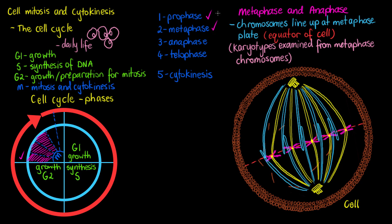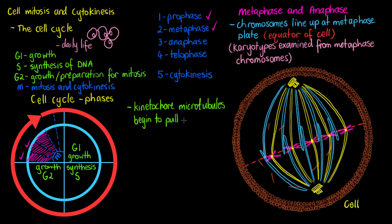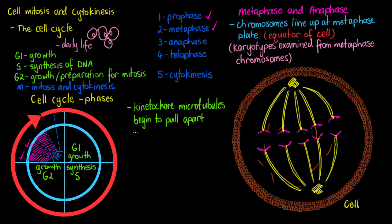That concludes our metaphase, so we can tick that one off. Now let's look at what's happening in anaphase. The first thing we'll see in anaphase is that our kinetochore microtubules are going to begin to pull the chromosomes apart. Instead of aligning them toward the midline, they're now pulling them toward their opposite poles.